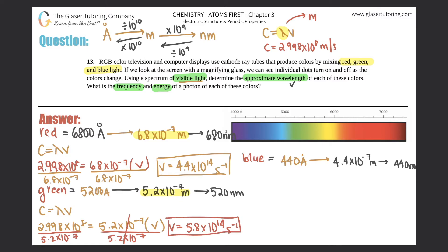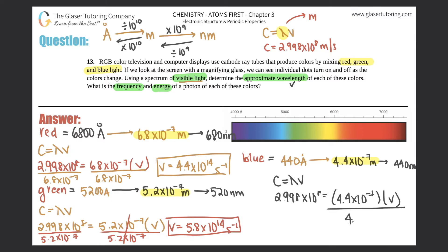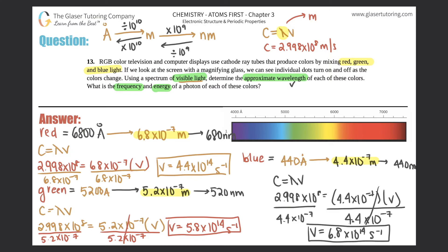For blue, c = λν. We use the meter value: 2.998×10⁸ = 4.4×10⁻⁷ × ν. Dividing both sides by 4.4×10⁻⁷, frequency equals 2.998×10⁸ ÷ 4.4×10⁻⁷, which gives us 6.8 times 10 to the 14th cycles per second, or hertz. Those are all three frequencies.